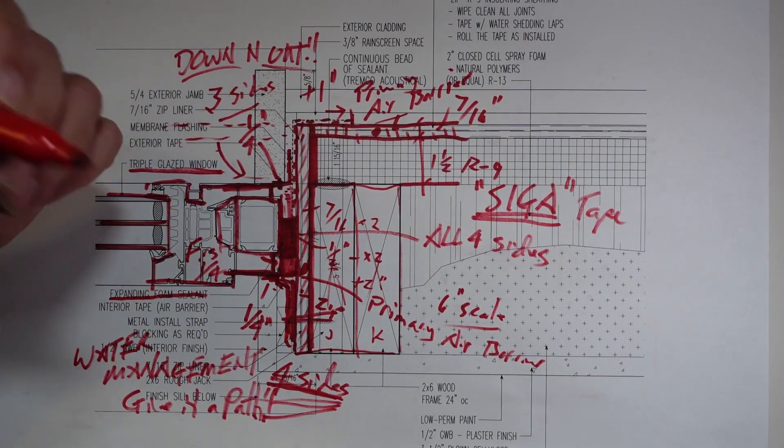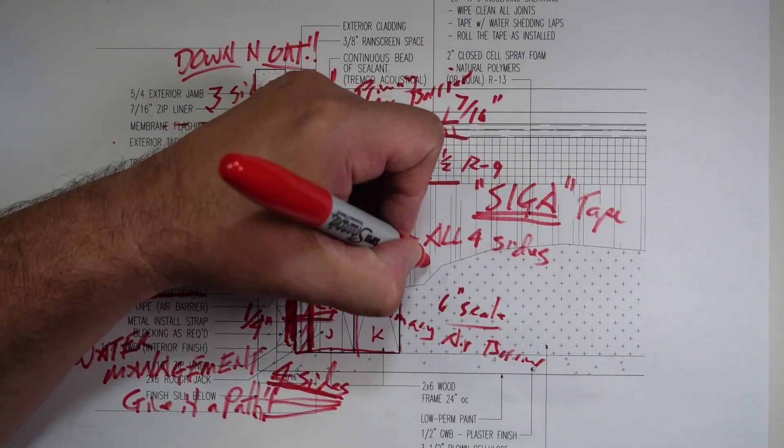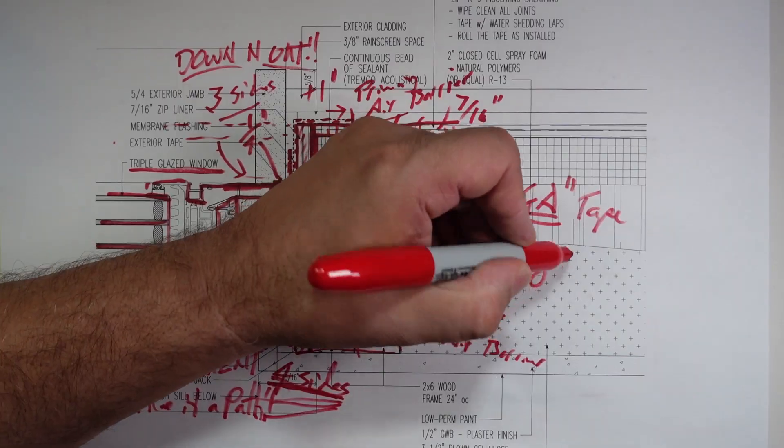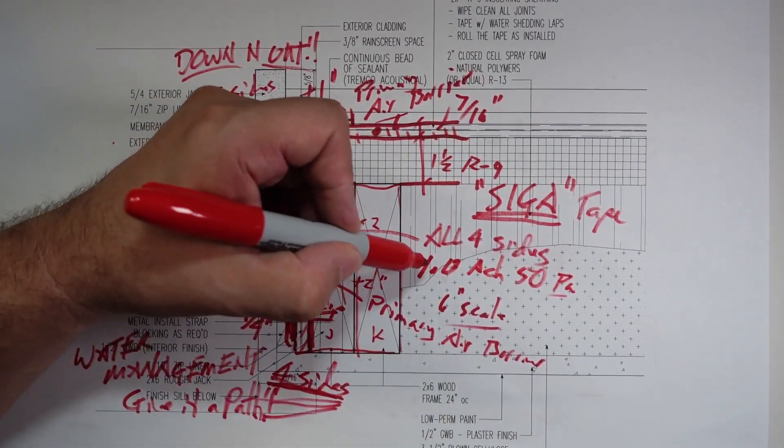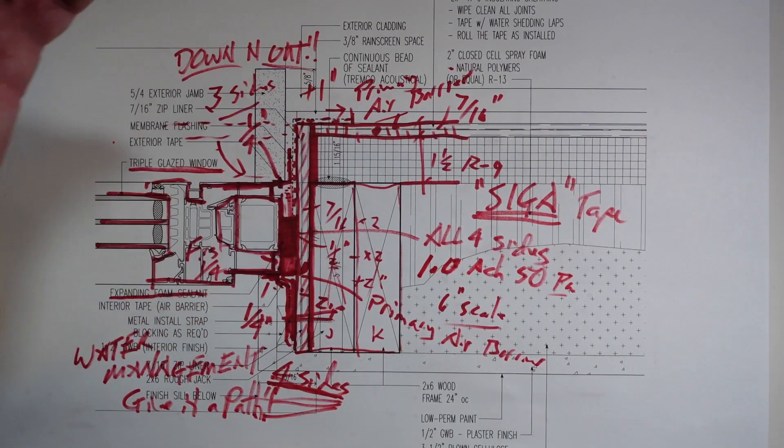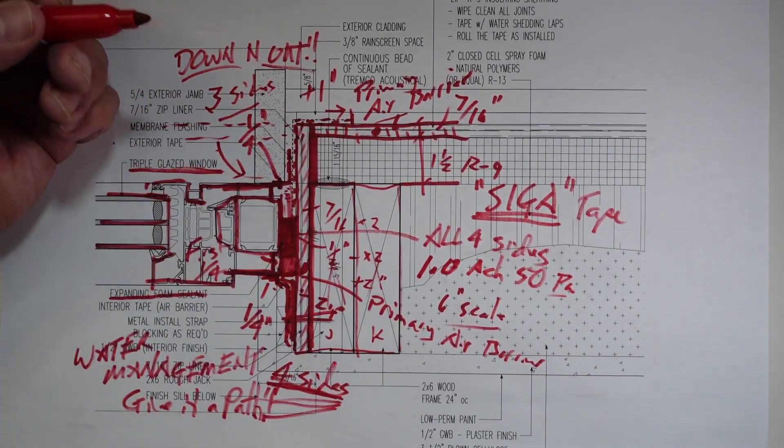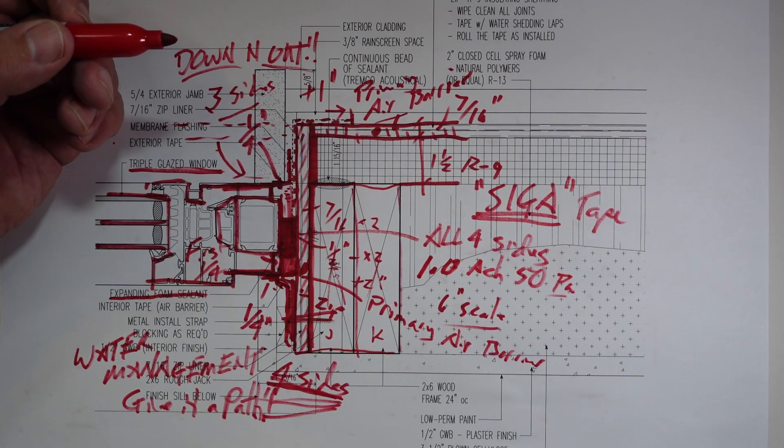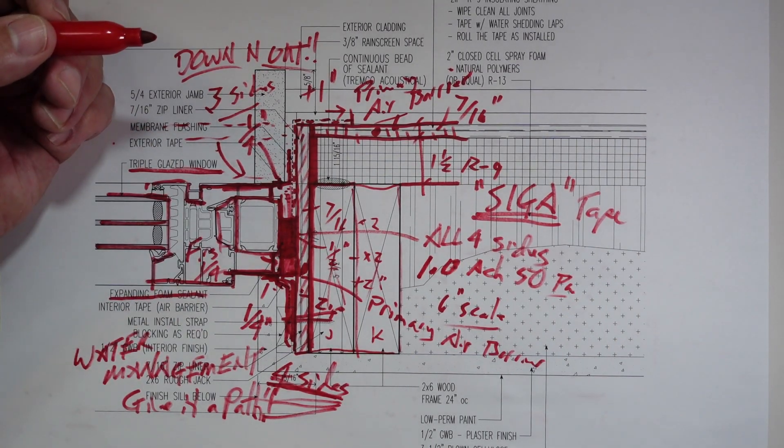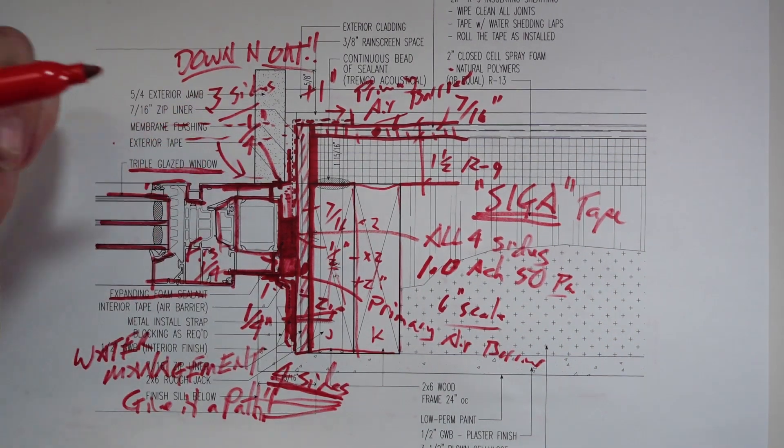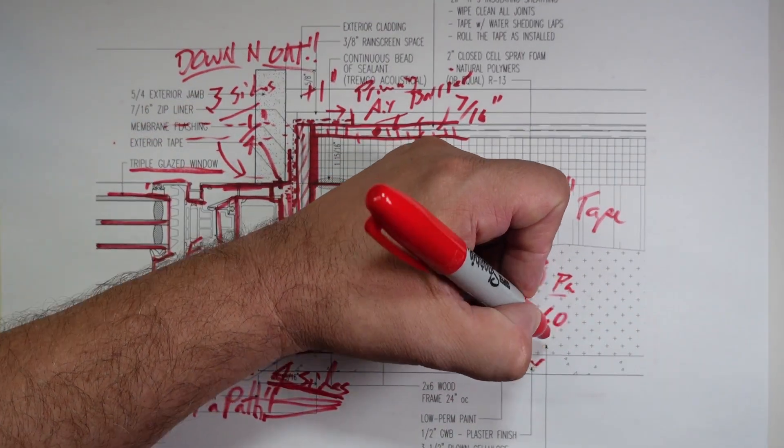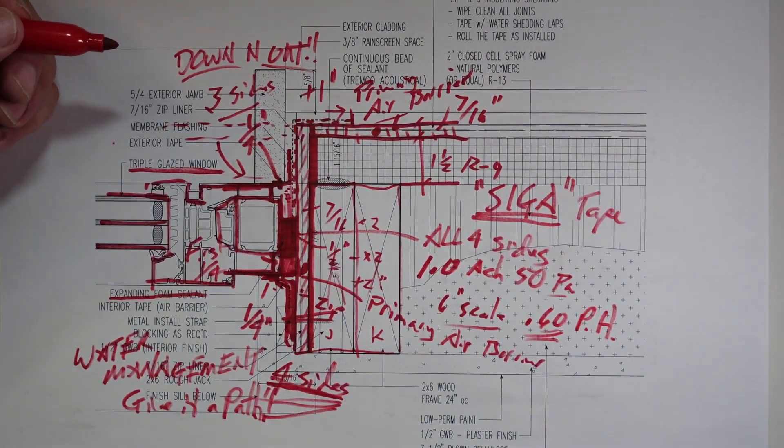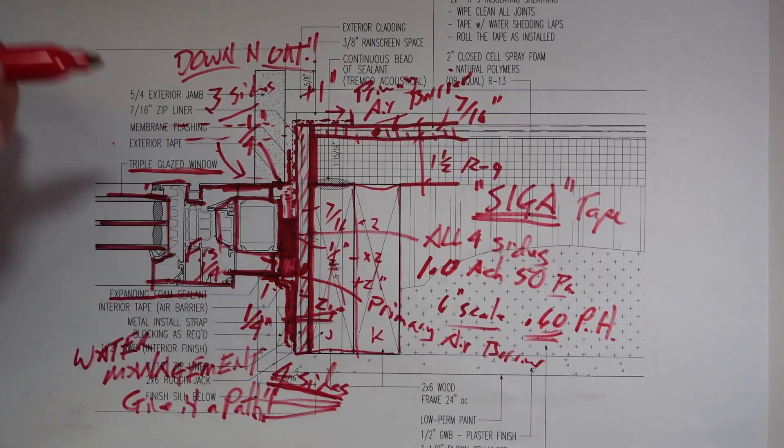In fact, we just did a blower door test out there and we were right at 1.0 ACH50. I want to get better than that and we will get better than that. We had some things that weren't entirely completed that we're working on getting those to be a little bit more sealed up. But 1.0 is our stepping off point and our goal is 0.60 or better, and that's basically passive house numbers. We should be able to get there.